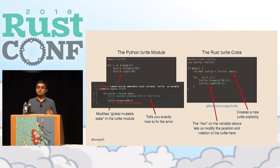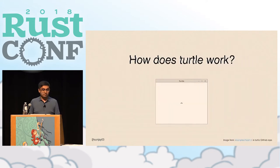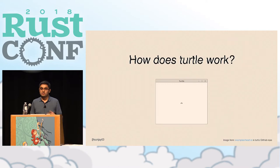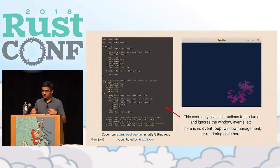That means that even if you're new and still not used to things, it's very hard to get stuck if you just read the error message. I'm very proud of the fact that although there are a few differences, the Rust code is basically the same as the Python version, and accomplishing that took quite a bit of effort. So let's talk about how I did it. The Turtle crate has quite a bit of stuff going on behind the scenes.